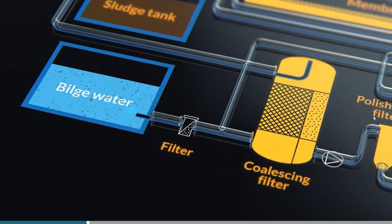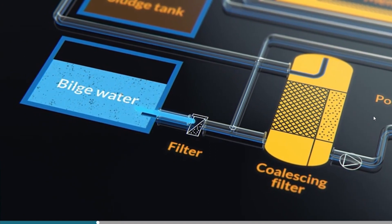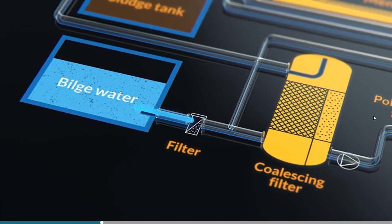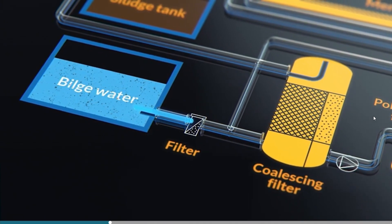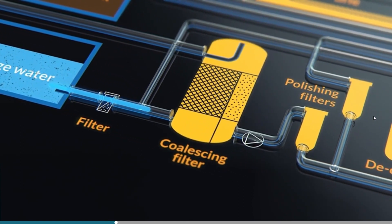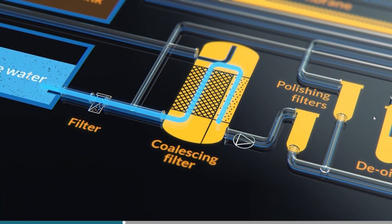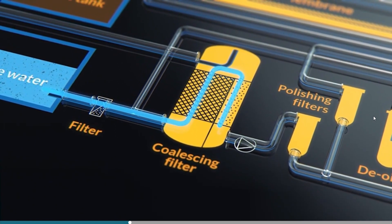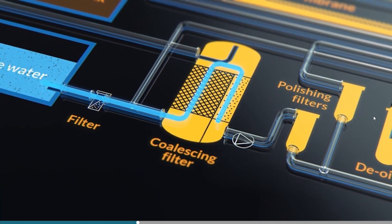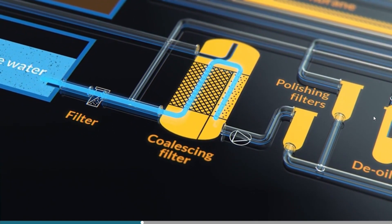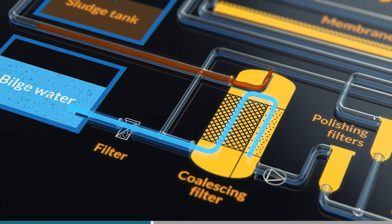Bilge water from the bilge tank is fed to a first stage via a filter. The filter prevents large solid impurities from entering the separator and causing blockages. In the first stage, the bilge water passes through a coalescing filter, where small oil droplets stick to the coalescing mesh. As the small droplets accumulate, they join together, coalesce, and then become buoyant enough to float off to the top of the first stage, from where they can be discharged to the sludge tank.